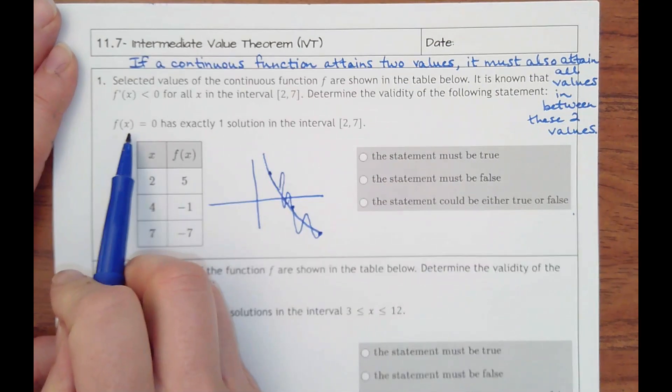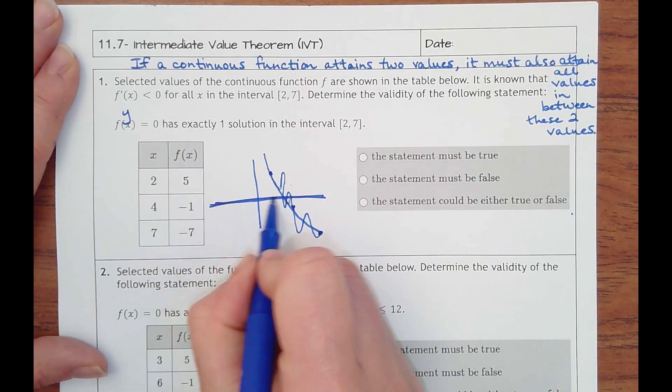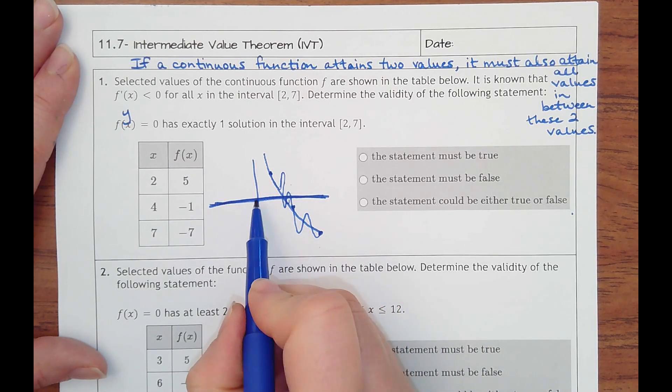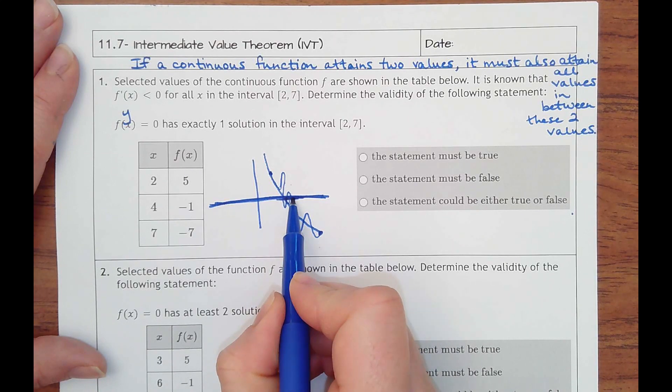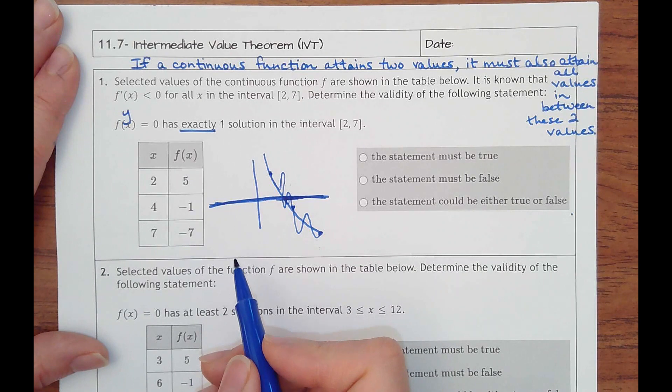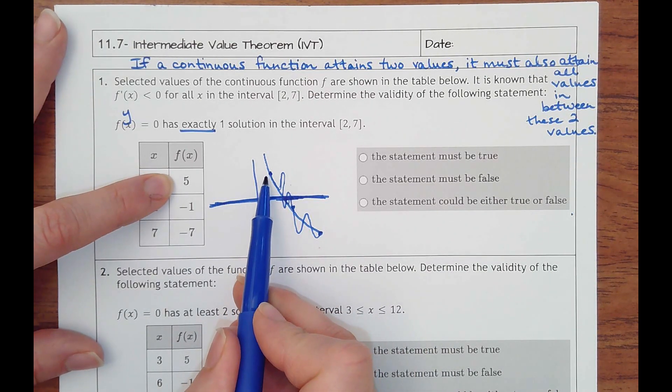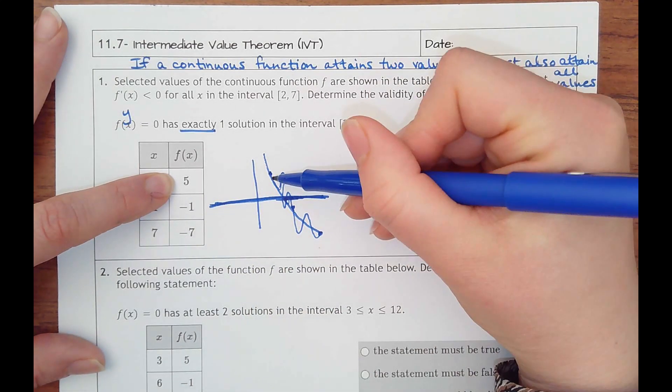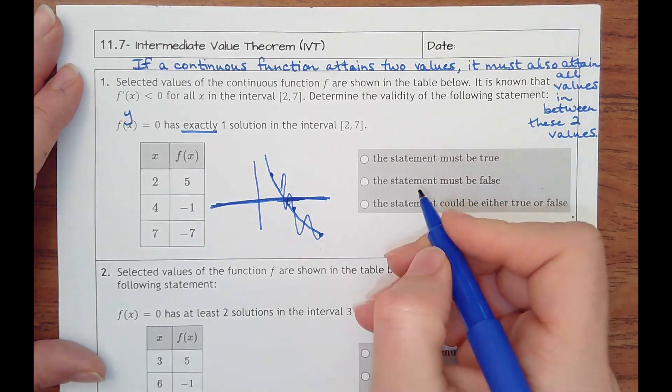And so it says y equals zero. So that means this right here has exactly one solution in the interval from two to seven. So do we know that it's going to cross through the x-axis exactly one time? No, we don't. We know at least once, right? It has to go from five to negative one at least once, but it could go down and back up and down and back up and down as many times as it wants to.